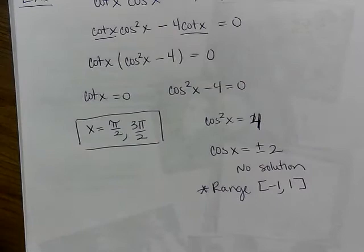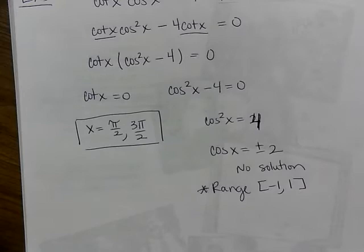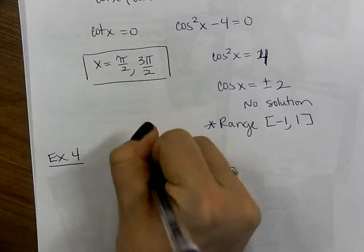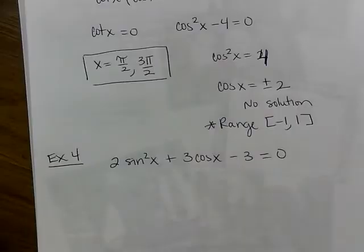Notice that so far our solutions always go in numerical order from least to greatest — you know I'm going to expect you to do that on the quiz. Next: 2 sin²(x) + 3 cos(x) − 3 = 0.